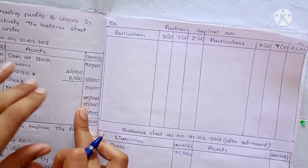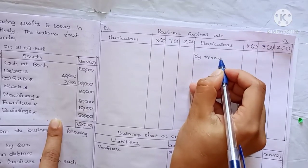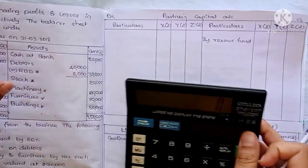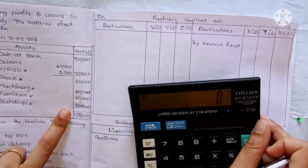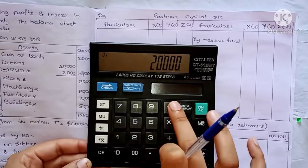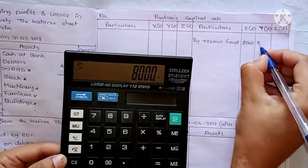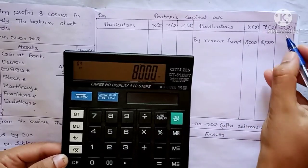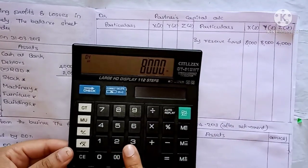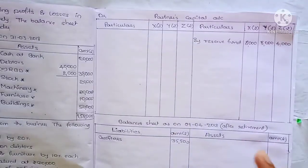As it is on the liability side, it goes to the credit side. So reserve fund is distributed in old ratio — old ratio includes all partners including the retiring partner. 20,000 in ratio 2:2:1. So 20,000 divided by 5 into 2 equals 8,000. The 1 share equals 4,000.